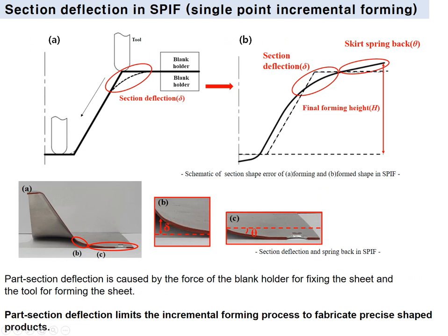The single-point incremental forming process has many advantages. However, low geometric accuracy is the main problem. When only the holder is employed and the tool moves with the developed G-code, geometric errors appear — including skirt springback, section deflection, and differences in the final forming height. When the tool contacts the material, there is unwanted bending deformation. The part sectional deflection is caused by the forces of the blank holder and the forming tool, limiting the process from fabricating precise shapes.